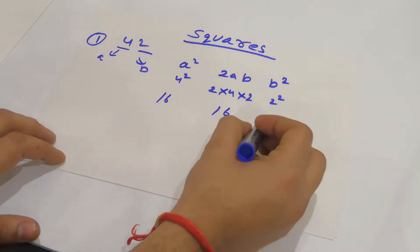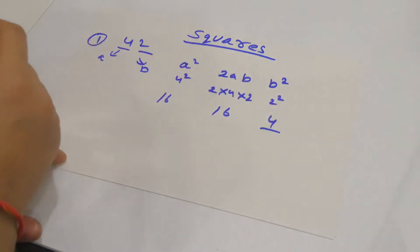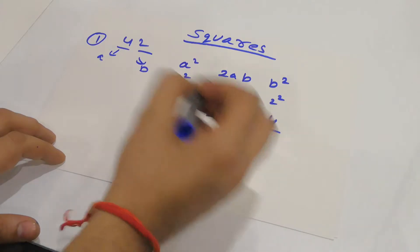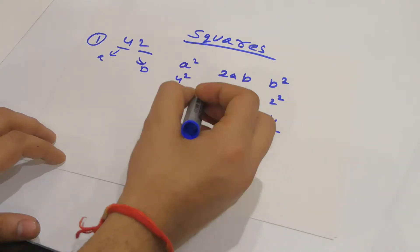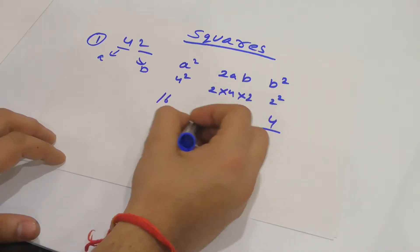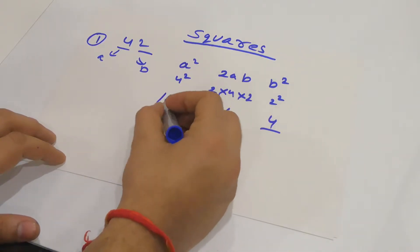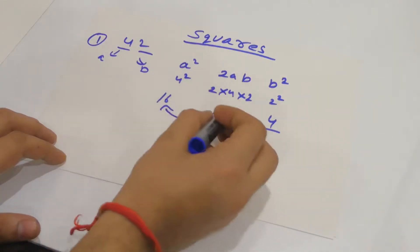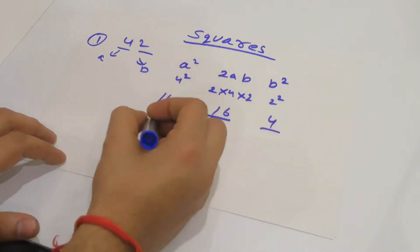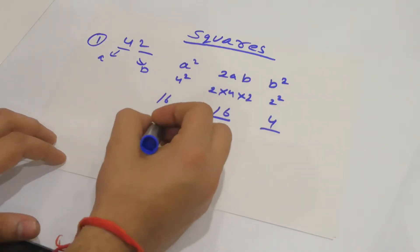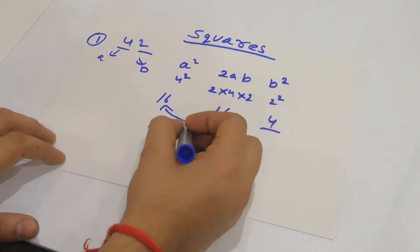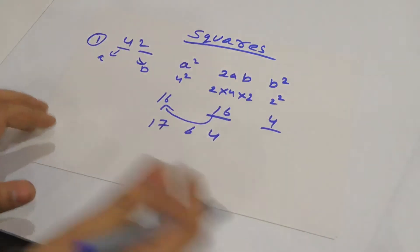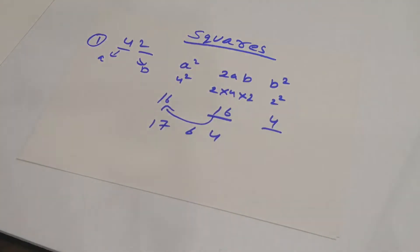In this case B² = 4 is only one digit, but 2AB = 16 has two digits — 1 and 6. So I'll take the 1 and add it to the A² column: 16 + 1 = 17. So the result is 17, 6, 4 — which means the square of 42 is 1764.